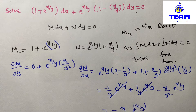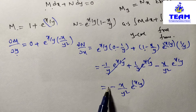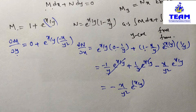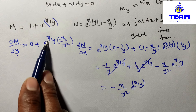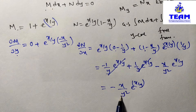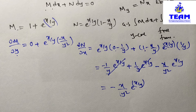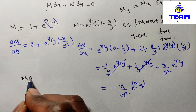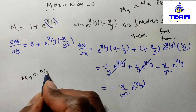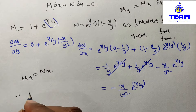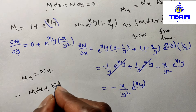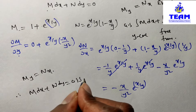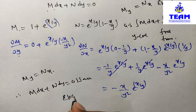Comparing the results: ∂M/∂y = -x/y² · e^(x/y) and ∂N/∂x = -x/y² · e^(x/y). Since ∂M/∂y equals ∂N/∂x, we conclude the given equation M dx + N dy = 0 is exact.